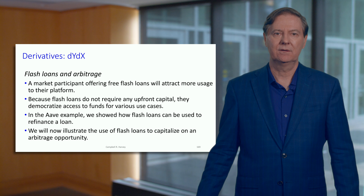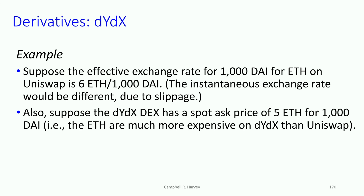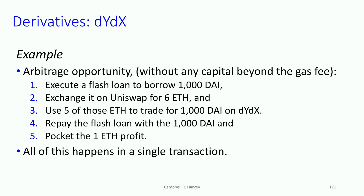We've got an exchange rate on Uniswap of 6 ETH for 1,000 DAI — that's just what we observe on Uniswap. Now suppose on DYDX we've got a spot price of 5 ETH for 1,000 DAI. Notice that ETH is much more expensive on DYDX. I've got 1,000 DAI, which is $1,000 — on DYDX that buys me 5 ETH, but on Uniswap I can get 6. So basically, it's more expensive on DYDX.